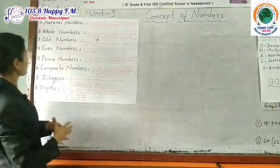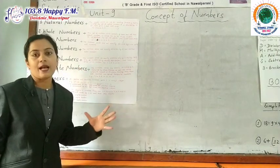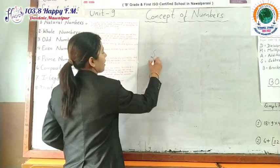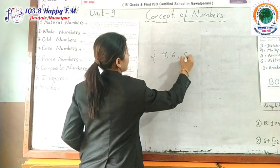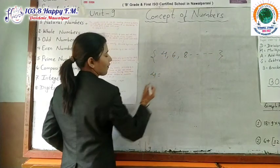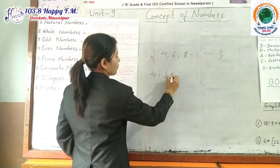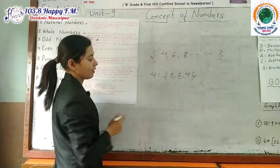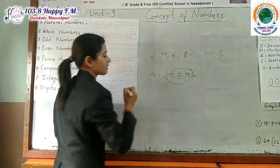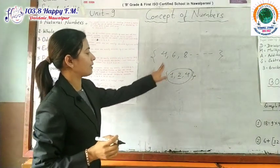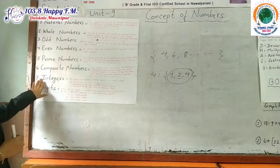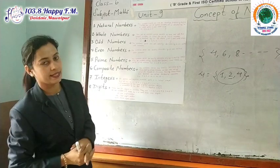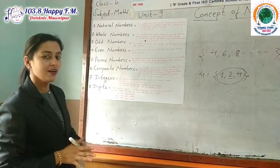Composite numbers are those numbers which have more than two factors. For example, 4, 6, 8 and so on are composite numbers. The factors of 4 are 1, 2, and 4 — that is three factors, which is more than two, so 4 is a composite number.